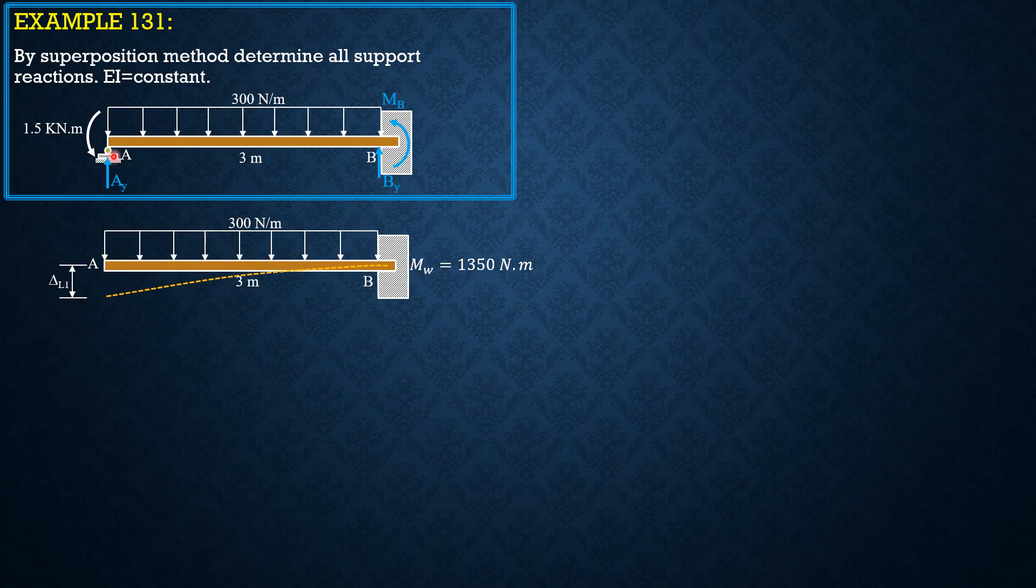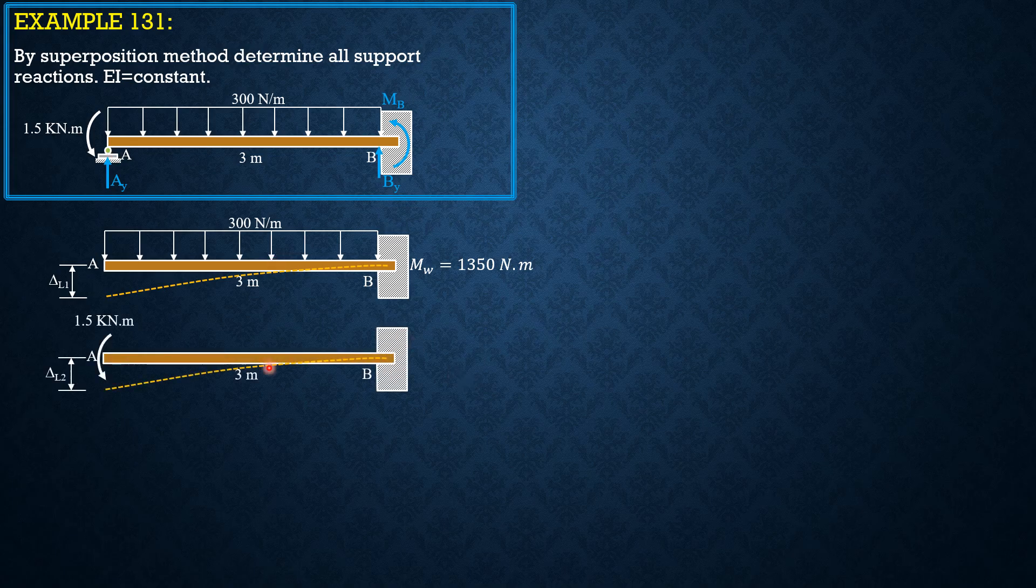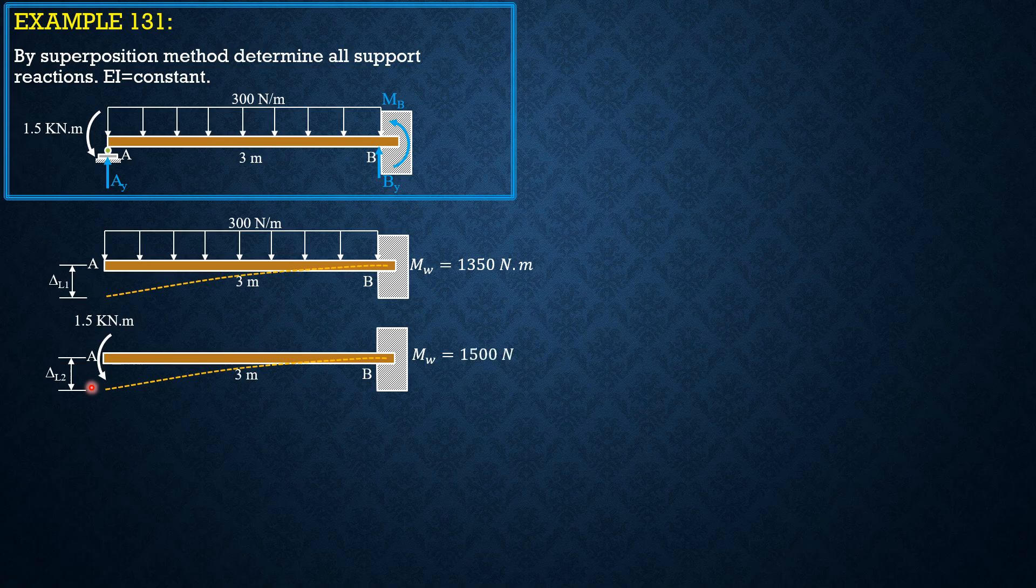For the 1,500 Nm couple loading, it is also 1,500 Nm. And the deflection at A is delta L2, downward deflection.